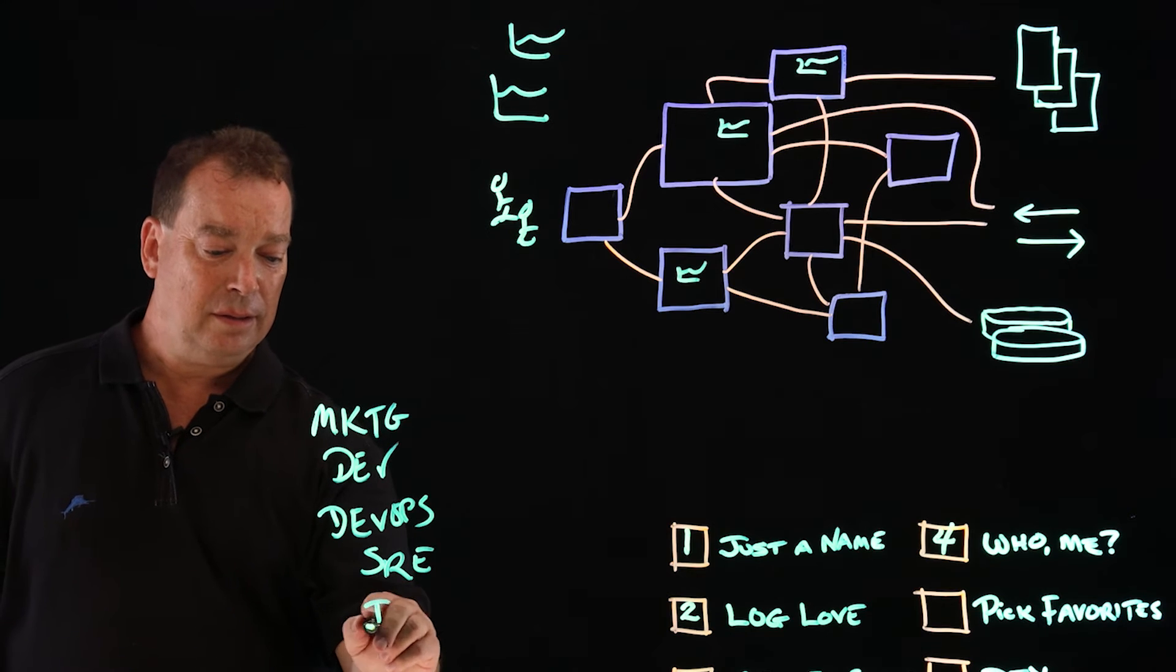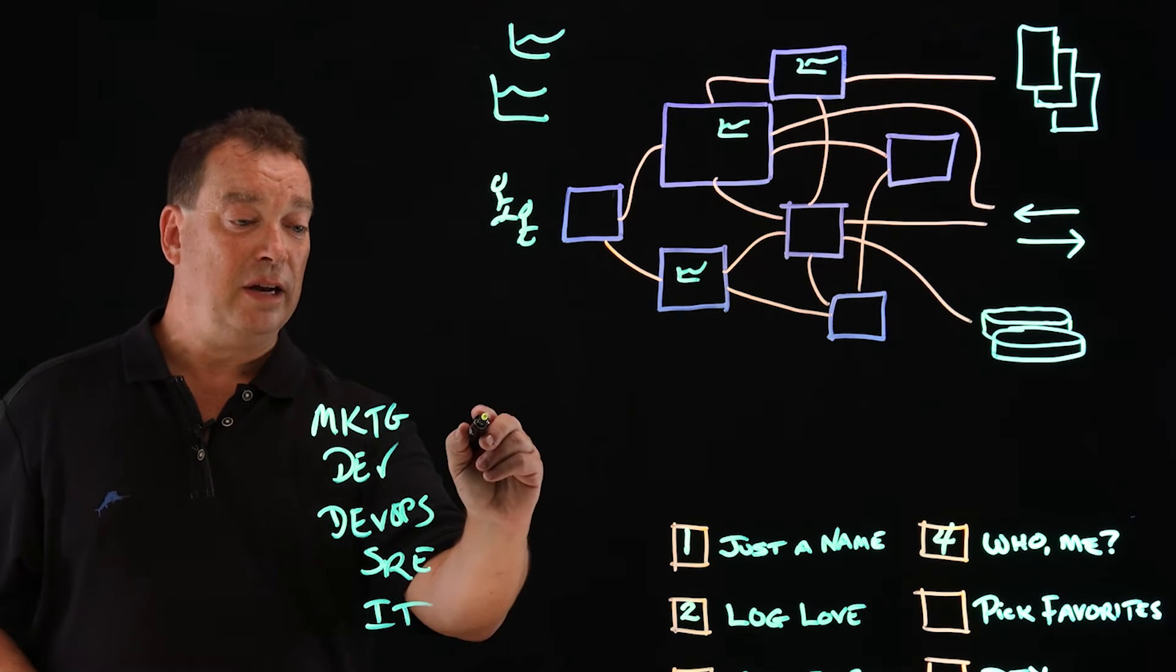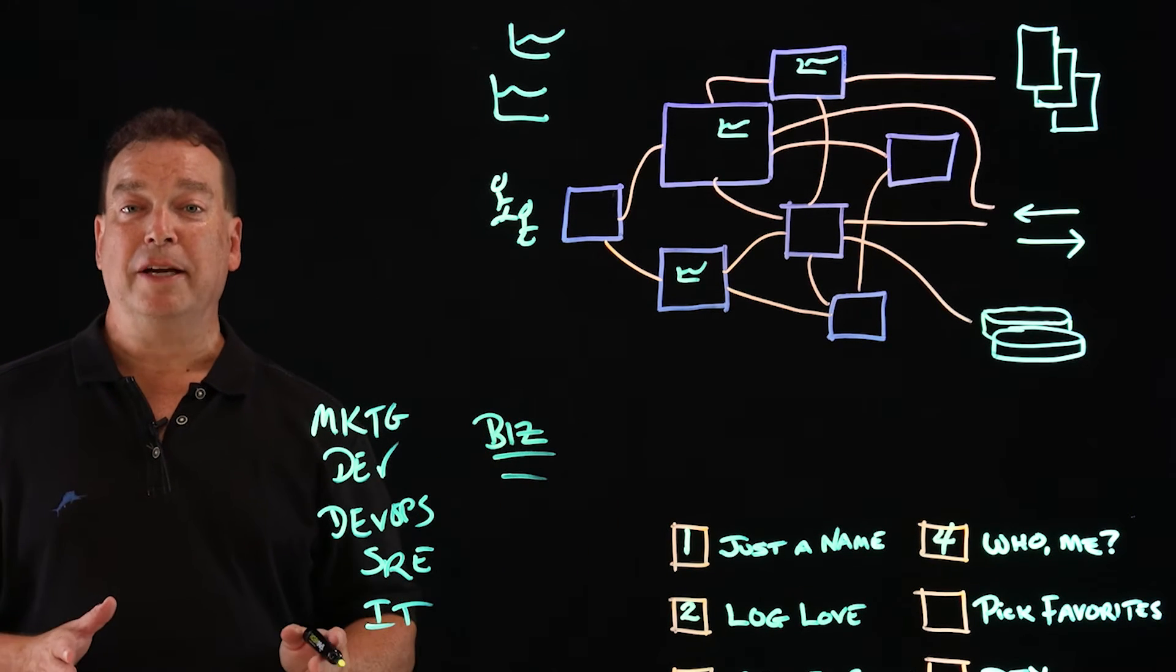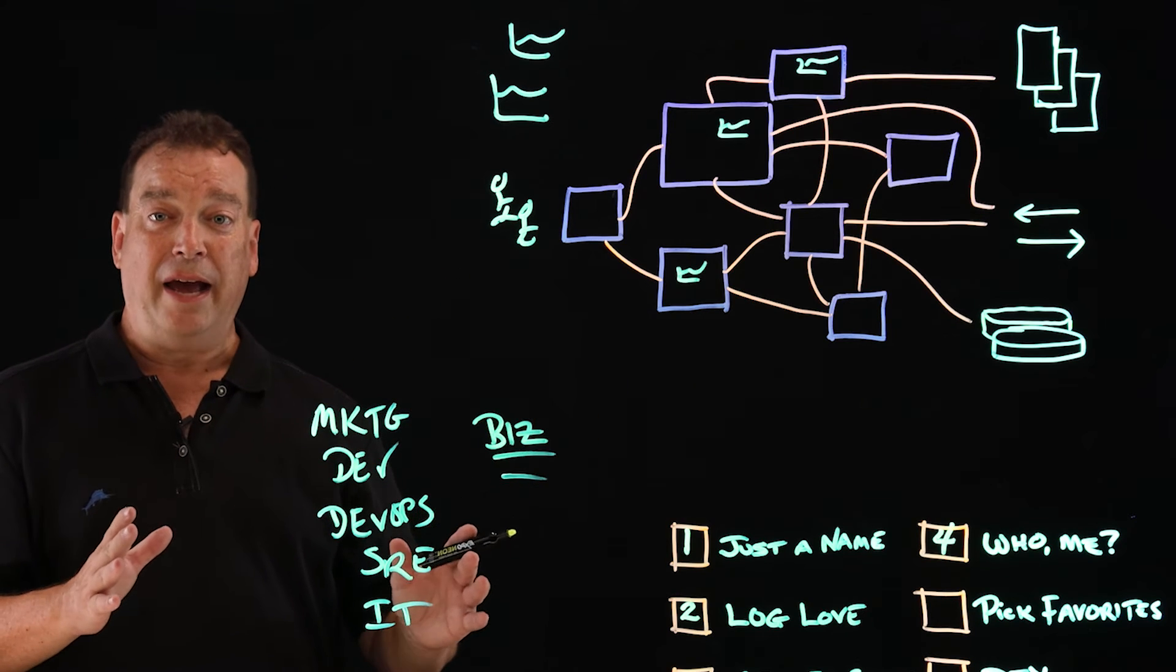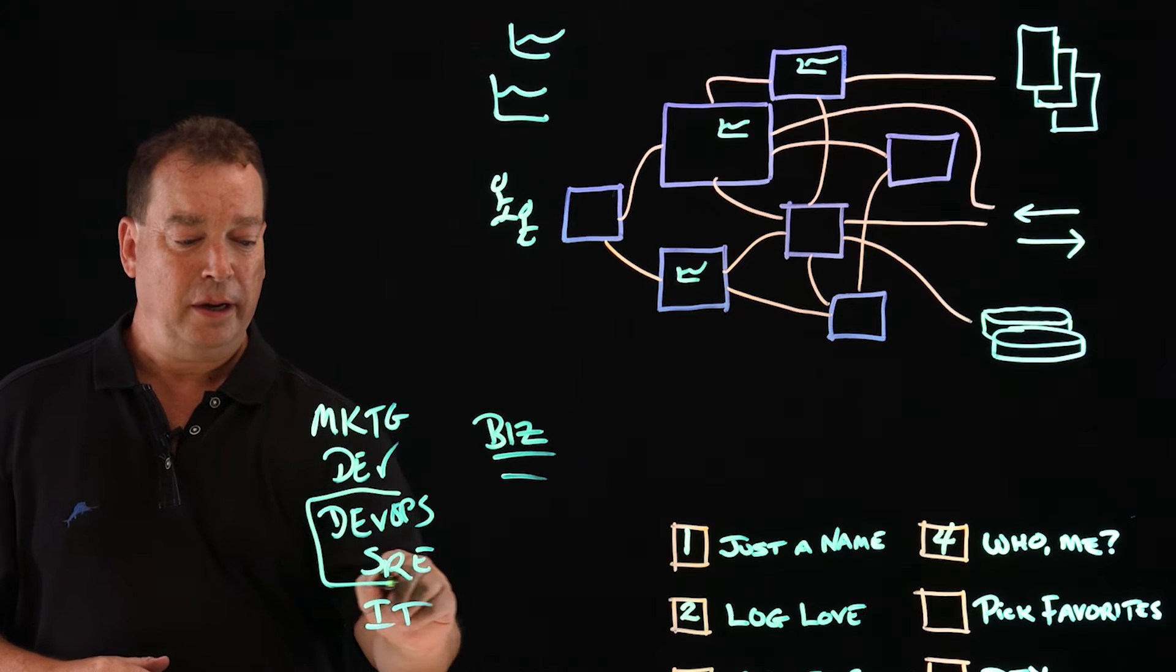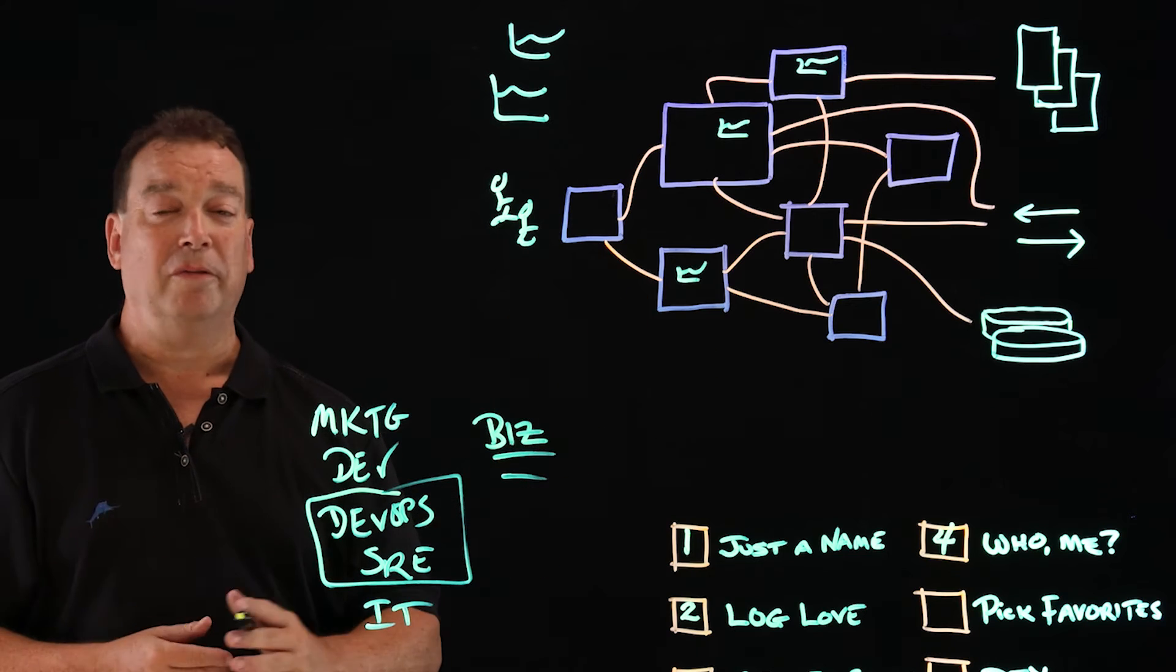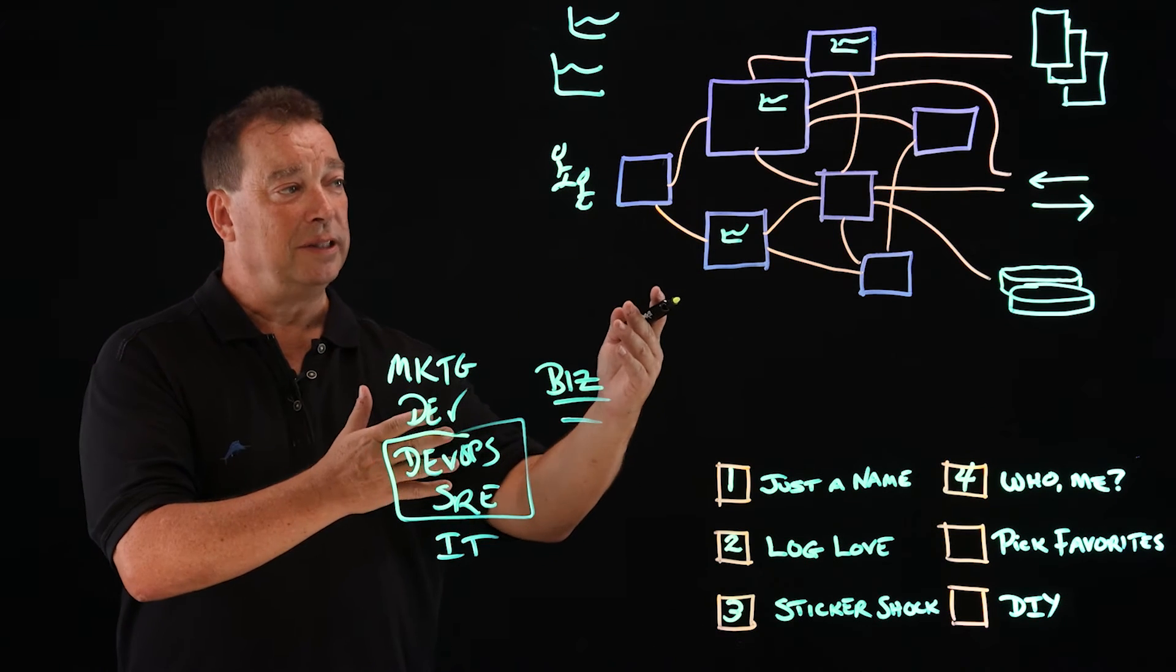You can even include your business users and give them the information they need. The fact is that observability takes all the data that in traditional monitoring is put just through your ops power users and makes it democratized, giving everyone a view of the data that they need so that they can do their job as an application stakeholder.